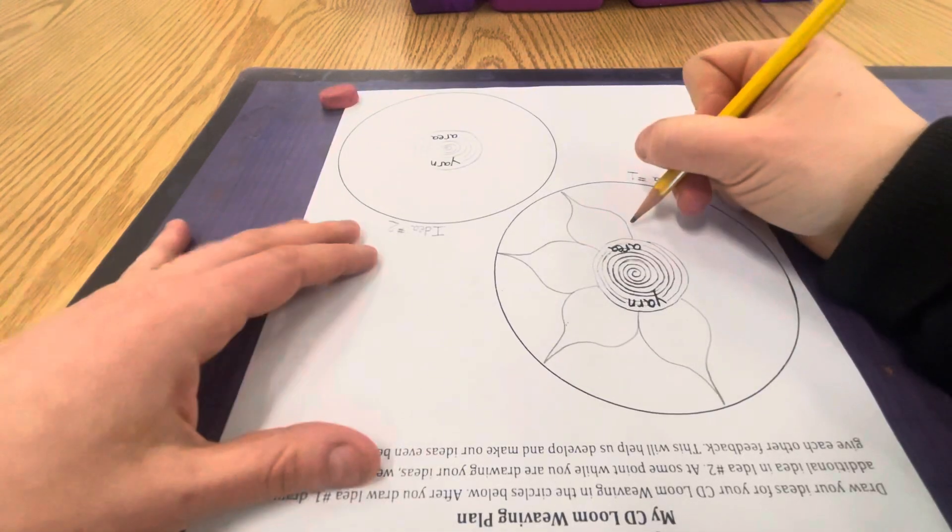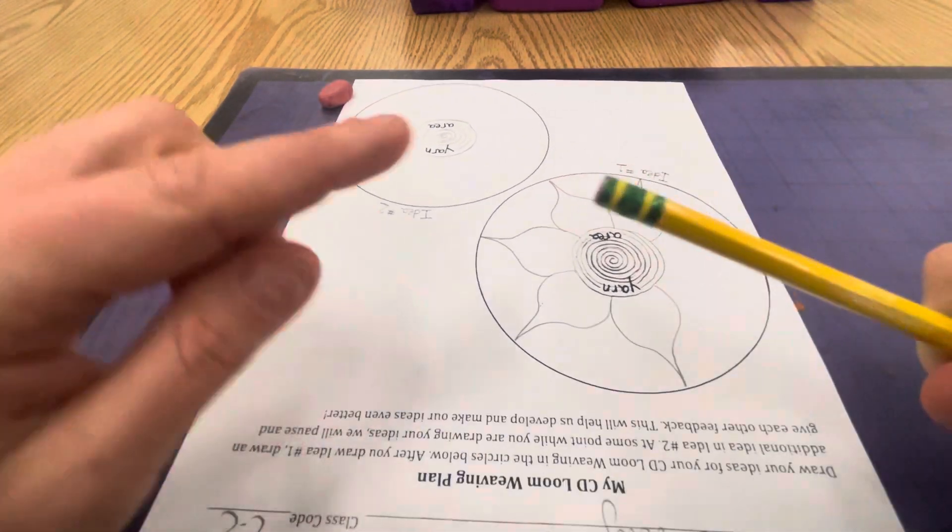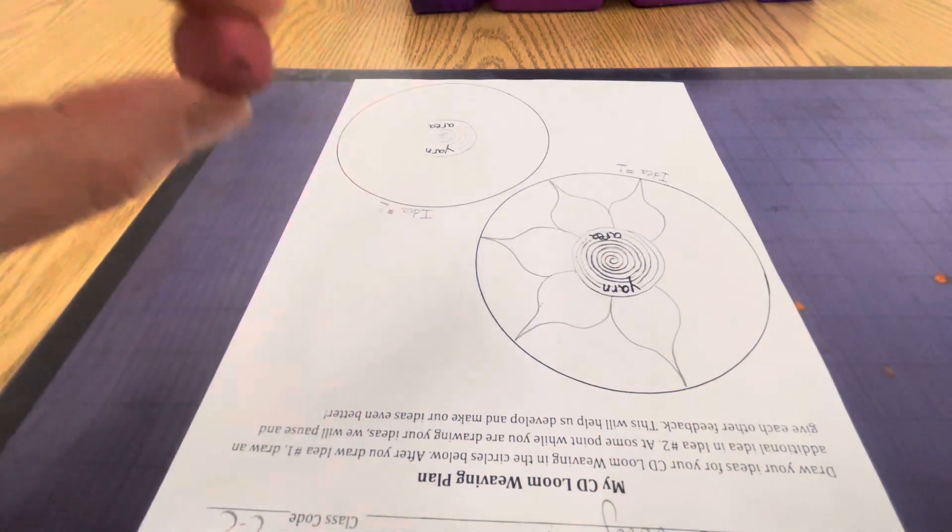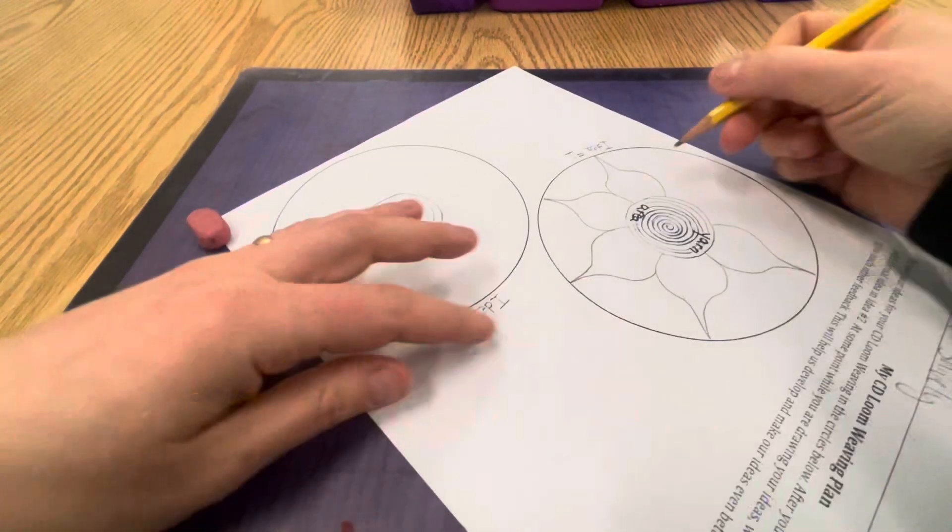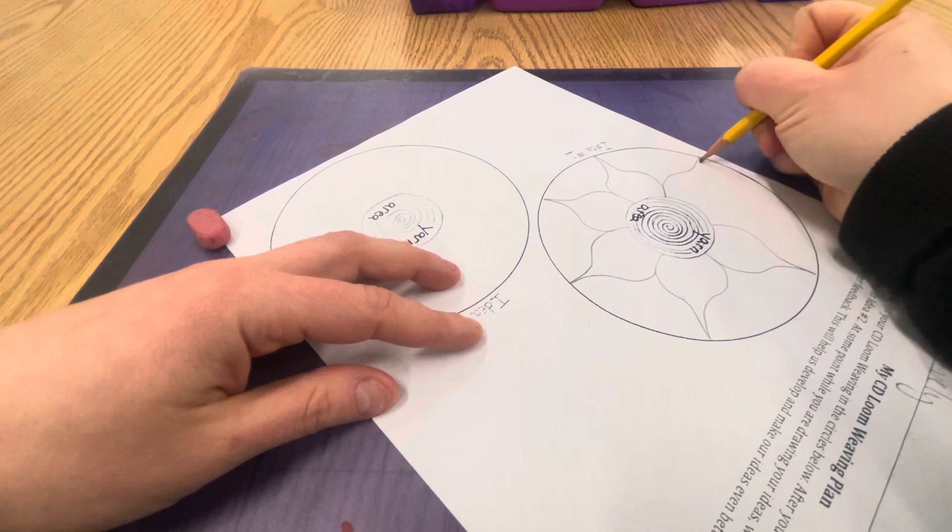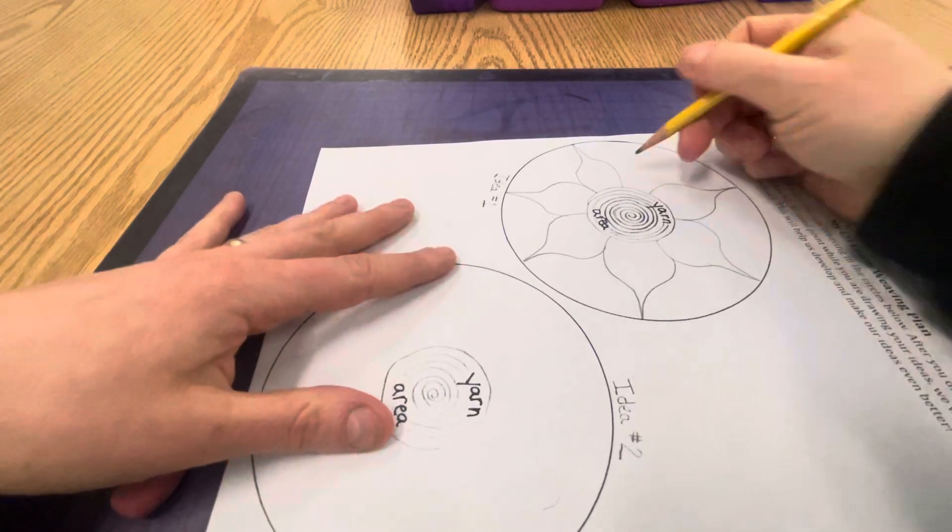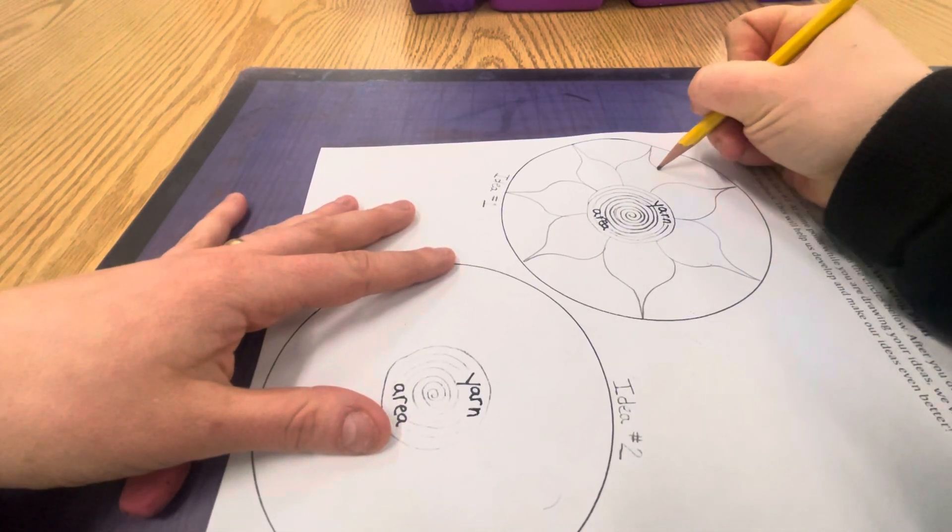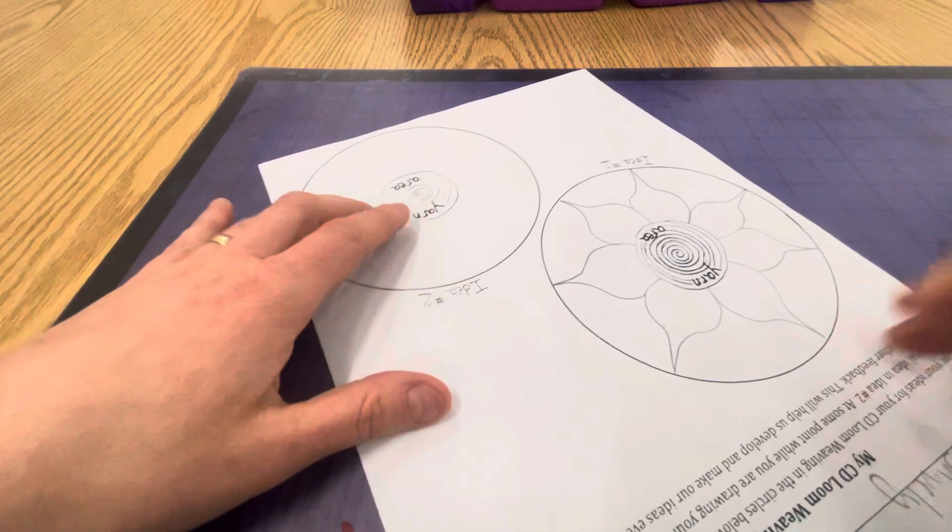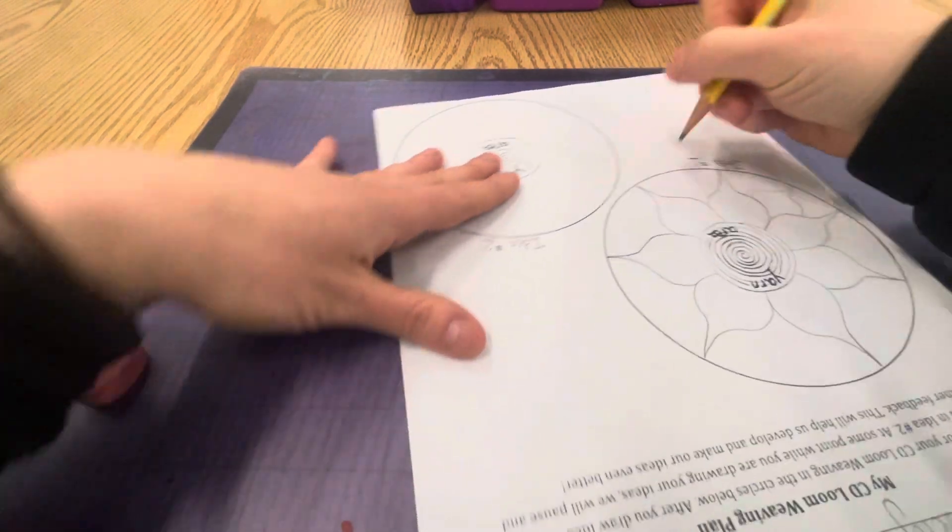Remember the pencils are in your caddy. There are not erasers on the back of them, but there are separate erasers for you if you want to make a change. Add details. Think about what you can do to make your design creative.